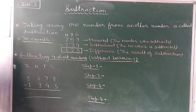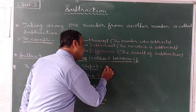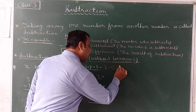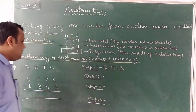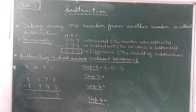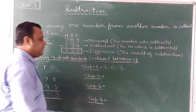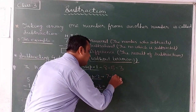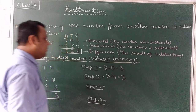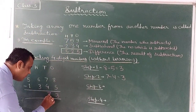In step 1, we subtract the ones place: 8 minus 5 equals 3. We write 3 under the ones place. In step 2, we subtract the tens place: 7 minus 4 equals 3. We write 3 at the tens place.